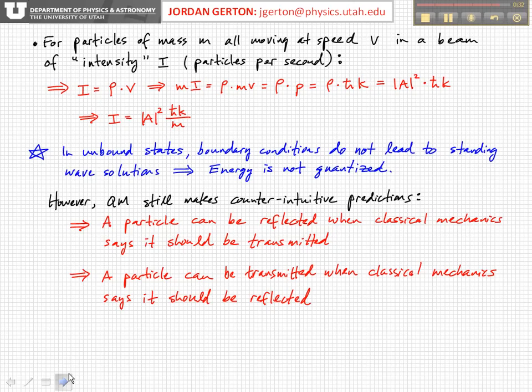But quantum mechanics still makes counterintuitive predictions that go counter to classical mechanics. For example, a particle that would encounter a force that would under classical mechanics reflect the particle, quantum mechanics says there's some probability that particle will be transmitted. And vice versa, a particle that would normally be transmitted through a particular region, quantum mechanics says there's some probability it will be reflected.